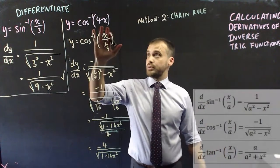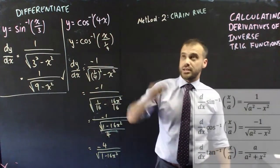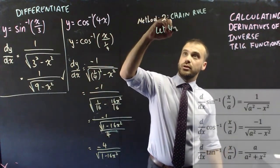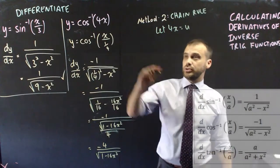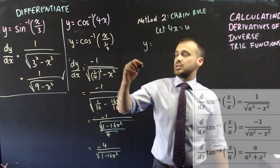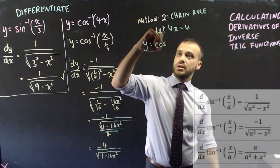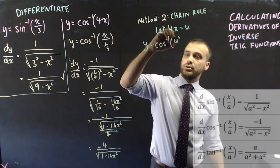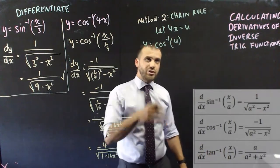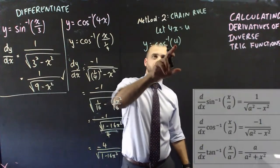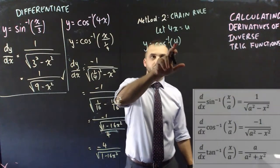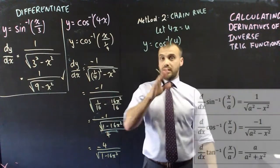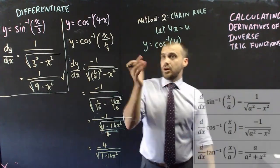Method 2 is the chain rule, and we start by letting our 4x equal u. Now if we let 4x equal u, we've got something easier to deal with, y equals cos⁻¹ u. Now if you look at your formula sheet, you don't want just like an x there, you want like an x over an a. Now in this case, this is u over 1.